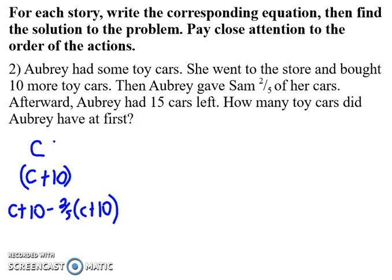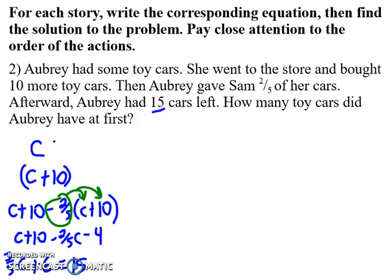So here again, as before, I have to take that minus two-fifths and distribute it. And that will give me C plus ten minus two-fifths C minus four. So that's three-fifths C plus six. And it says now Aubrey had 15 cars left. So I know that has to make an equation by making that equal to 15.